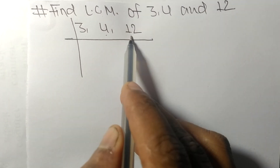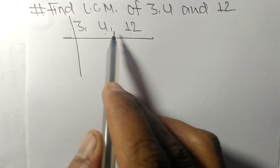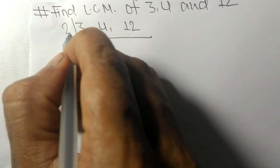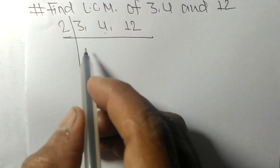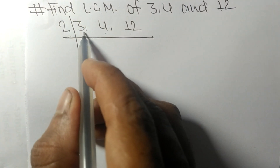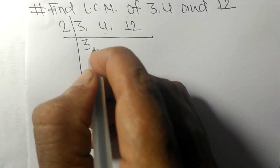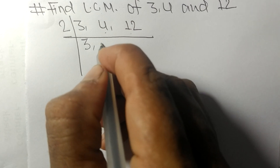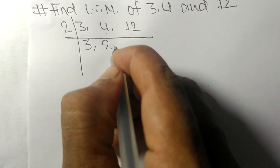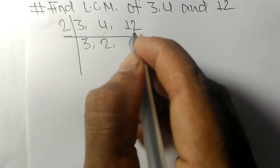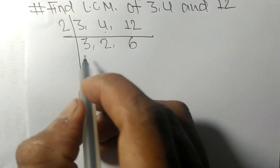4 and 12 are exactly divisible by 2; 3 is not divisible, so it stays the same. 2 times 2 means 4, and 2 times 6 means 12. So now we have 3, 2, and 6.